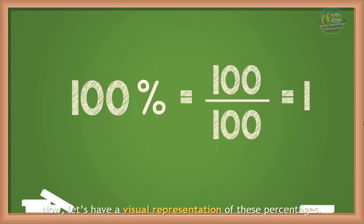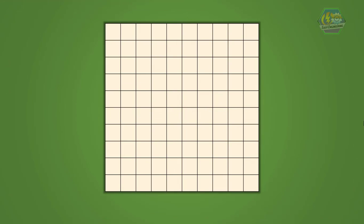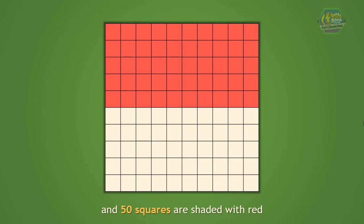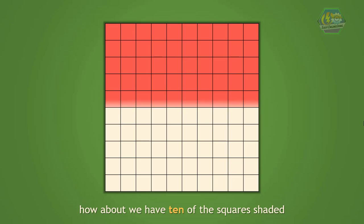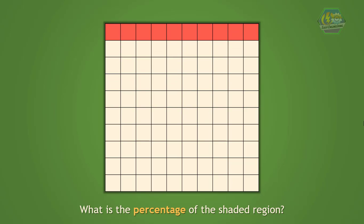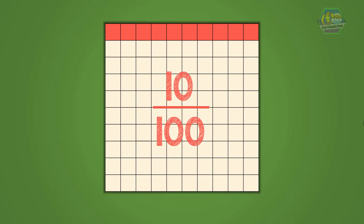Now let's have a visual representation of these percentages. This grid has 100 squares and 50 squares are shaded with red, therefore 50 percent of the squares are shaded. Now if 10 of the squares are shaded, what is the percentage of the shaded region? Since 10 out of 100 squares are shaded, the fraction is 10 over 100, meaning 10 percent are shaded.